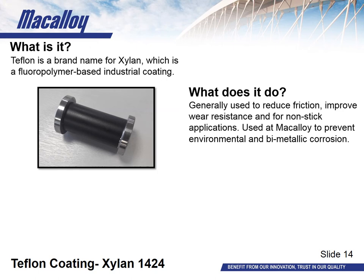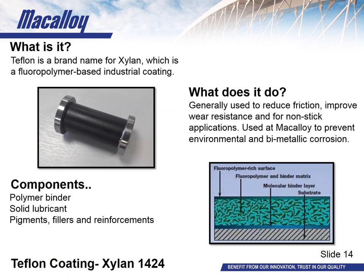You may find examples of Teflon within your own home — a lot of cooking equipment is coated in Xylan due to its heat resistance and non-stick properties. The Xylan coating matrix is composed of three basic ingredients: a polymer binder for film strength, adhesion and protection from the softer lubricating particles; a solid lubricant for low friction, release and resistance to wear; and finally pigments, fillers and reinforcements for colour and additional properties such as hardness.